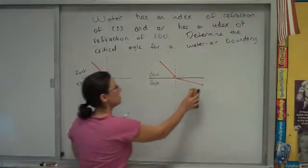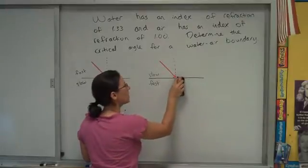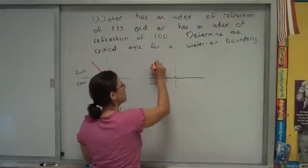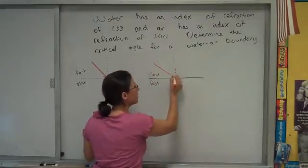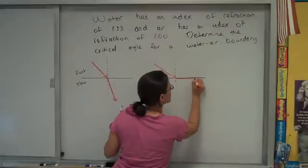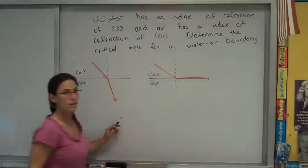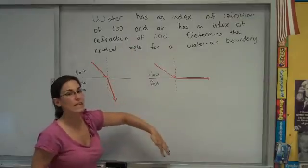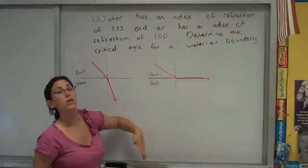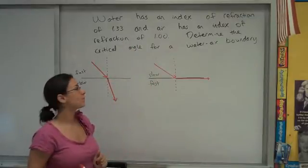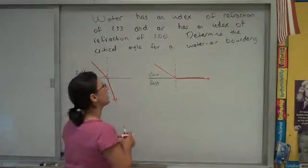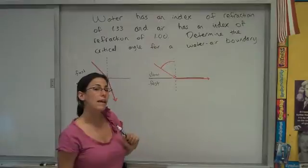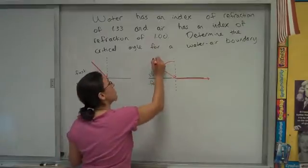You can make your incident angle so big that the refracted angle is essentially going to be 90 degrees. It's going to be skimming the surface. Beyond that, no light can get out. It's not going to refract out. It's called total internal reflection. At some point, I'm going to get the last possible incident angle that produces any refraction at all. That's called the critical angle.